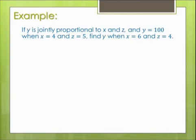Alright, so first step, I want to write the equation in variable form. So y is jointly proportional to x and z. So y equals k times x times z.